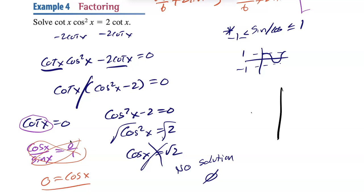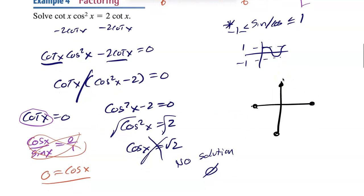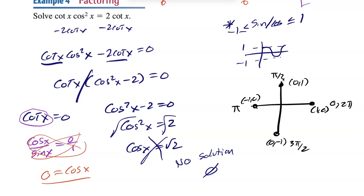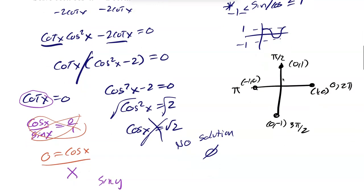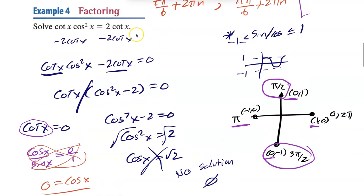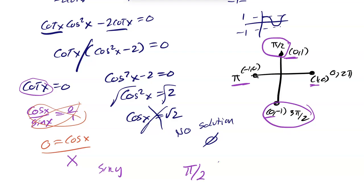Cosine equals 0 is a unit circle problem. On the unit circle: (1,0) at 0, (0,1) at π/2, (−1,0) at π, (0,−1) at 3π/2, back to 2π. Cosine is the x-value, so we're looking for where x equals 0. That happens at π/2 and 3π/2. Since there's no domain given, we write the general solution: π/2 + 2πn and 3π/2 + 2πn.